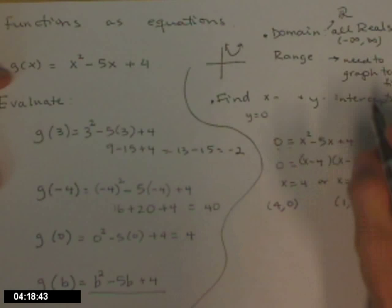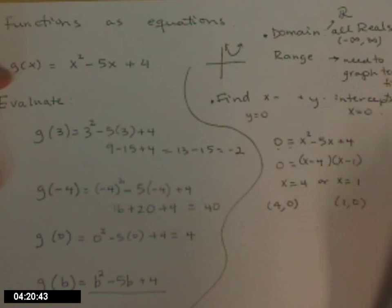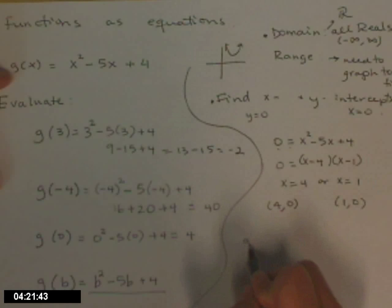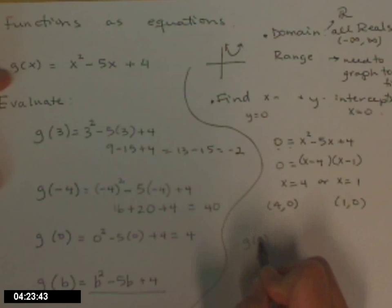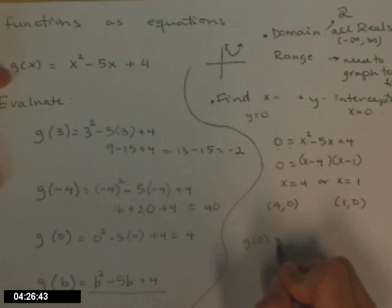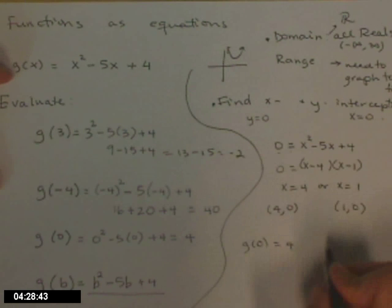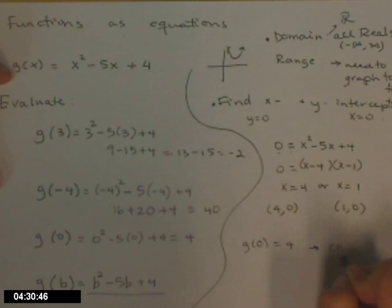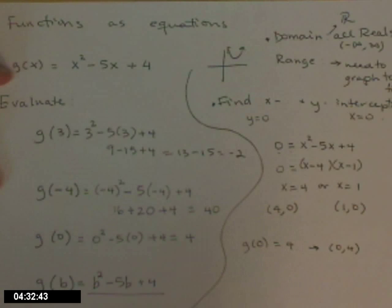For the y-intercept, we know that x equals 0. So to find that, I evaluate my function at 0 — I replace all the x's with 0. We actually did that already, so the y-intercept is the point (0, 4).